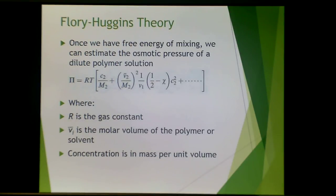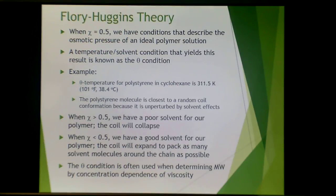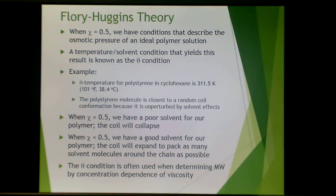Once we have the free energy of mixing, we can estimate the osmotic pressure for a dilute solution, where R is the gas constant and v_i is the molar volume of the polymer or solvent, and concentration is in mass per unit volume. When chi equals 0.5, we have conditions describing the osmotic pressure of an ideal polymer solution — this temperature-solvent condition is known as the theta condition. For example, the theta temperature for polystyrene in cyclohexane is about 38.4°C (101°F), where the polystyrene molecule is closest to random coil conformation, unperturbed by solvent effects. When chi is greater than 0.5 we have a poor solvent and the coil collapses; when chi is less than 0.5 we have a good solvent and the coil expands. The theta condition is often used when determining molecular weight by the concentration dependence of viscosity.